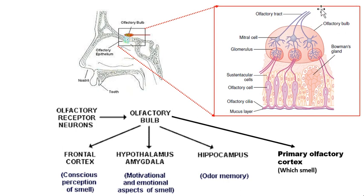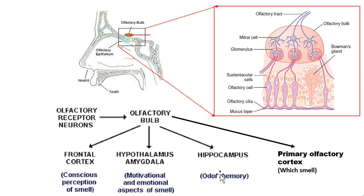The olfactory bulb leads to the olfactory tract, leading to higher centers. Roughly, the main information about smell goes to the primary olfactory cortex, then to the frontal cortex for perception of smell — where we become aware of that smell — to the hypothalamus and amygdala for the emotional response. Smells are always related with good or bad events which we memorize.